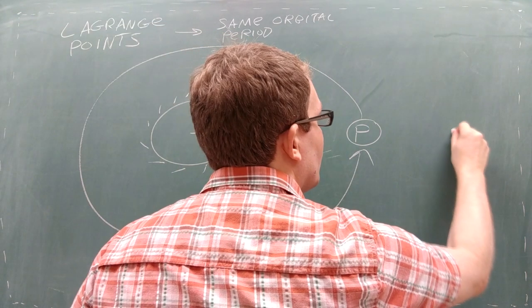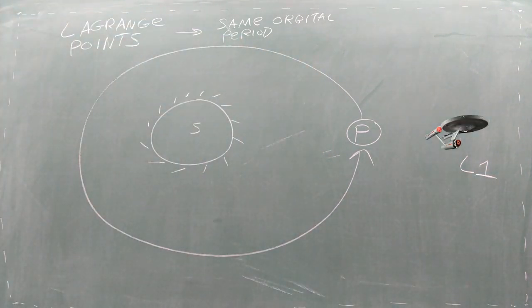The first Lagrange point is located just behind the planet where the forces combine, giving the spacecraft just enough force to rotate in sync with the planet.